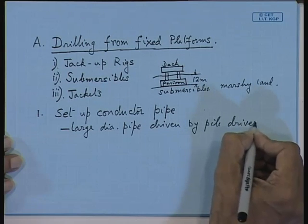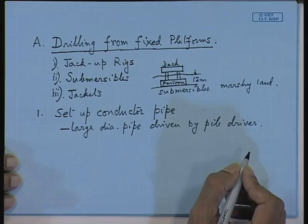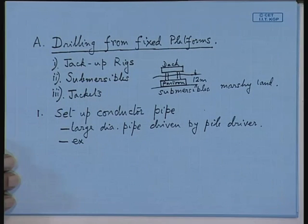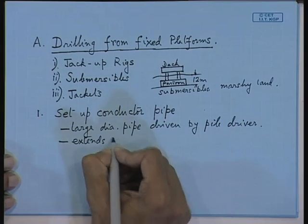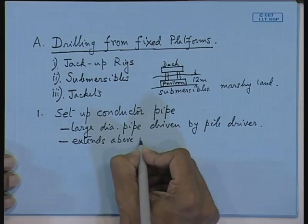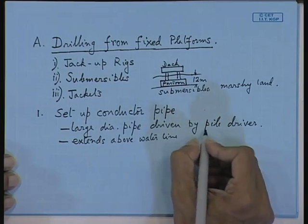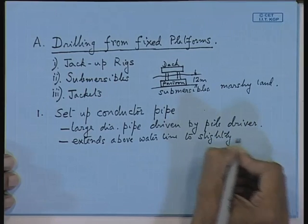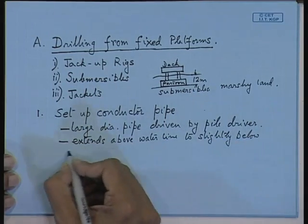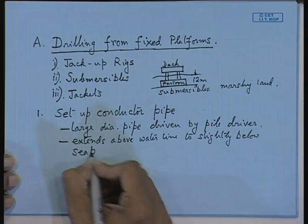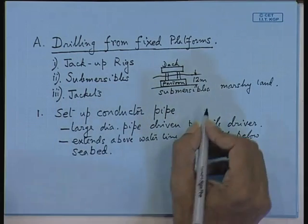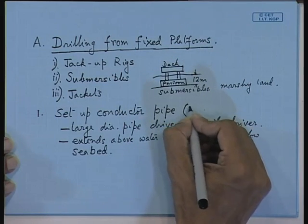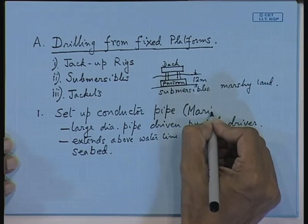You must have noticed this when piling work is carried out for buildings. This conductor pipe extends from above the water line to slightly below the sea bed. This is the extent of your conductor pipe. It is a very important pipe which transports oil from the oil well below to your platform. Sometimes this is also called a marine riser.